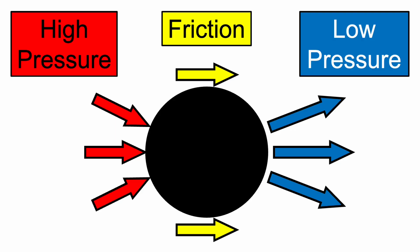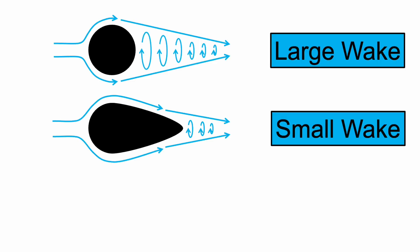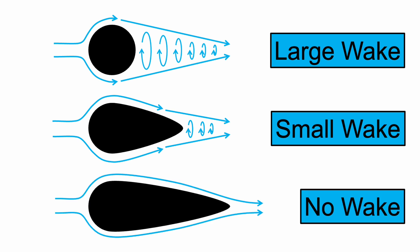Now that we understand how parasite drag is created, let's talk about how to minimize it. The biggest factor contributing to drag is the turbulent wake at the back. If we change our sphere to a teardrop shape, the streamlines don't have to curve as much, so they stay attached to the surface longer, resulting in a smaller wake. Making the teardrop shape even longer can eliminate the wake almost entirely, significantly reducing total parasite drag.